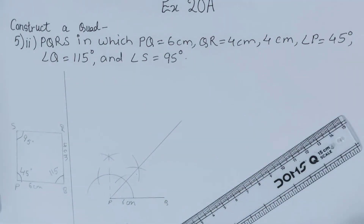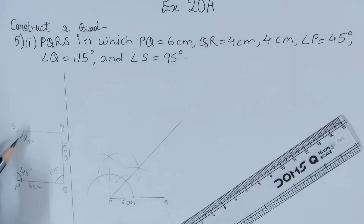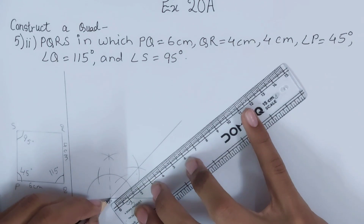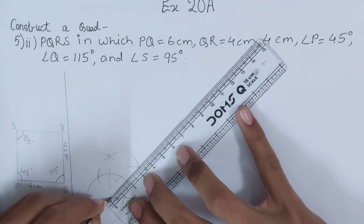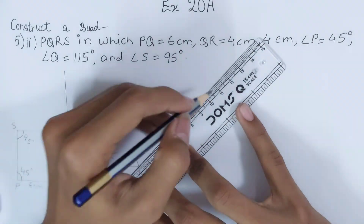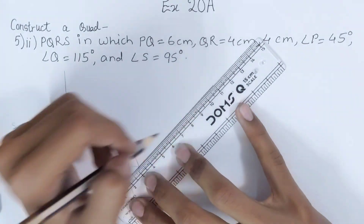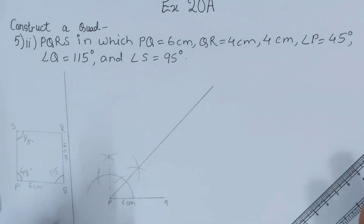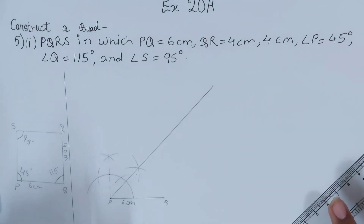What we want to do is extend this line as much as possible, because we don't know the value of PS — it can be any value. So I will extend it as long as I can so that in future I don't have to worry about extending its length. Now we move to point Q where we have to make 115 degrees.